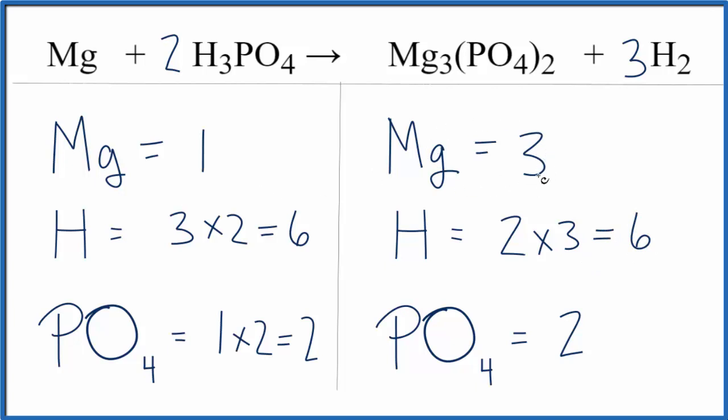We have three on the product side and only one on the reactant, so we'll just put a three right here. One times three, that gives us three, and this equation is balanced.